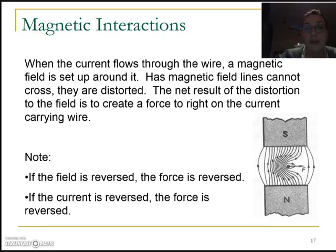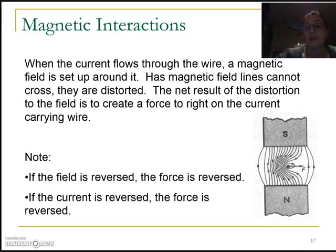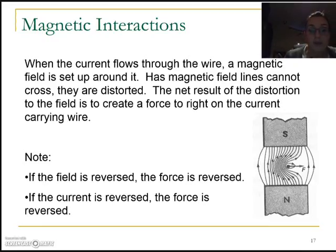When the current flows through the wire, it gets its own magnetic field. Because lines of magnetic force can't cross, we get some distortion and interaction of the fields, and the force pushes on the wire. Now, if we were to reverse the polarity of the magnets, the force would be reversed — it would go in the opposite direction. And also if we were to reverse the current flowing through that wire, the same thing would happen — the force would be going in the opposite direction.